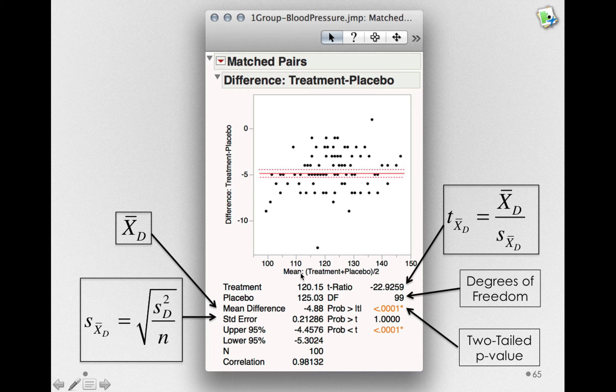On the x-axis, we're looking at the mean for each individual of treatment plus placebo over 2. That is, just their average blood pressure. On the y-axis, we're looking at the difference score for each individual.